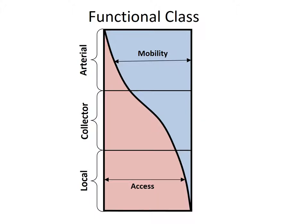Functional classifications are used to group roadways that serve similar transportation needs. These needs are often seen as two conflicting objectives: access and mobility. The mobility function provides few opportunities for entry and exit, which results in low travel friction from vehicle access.